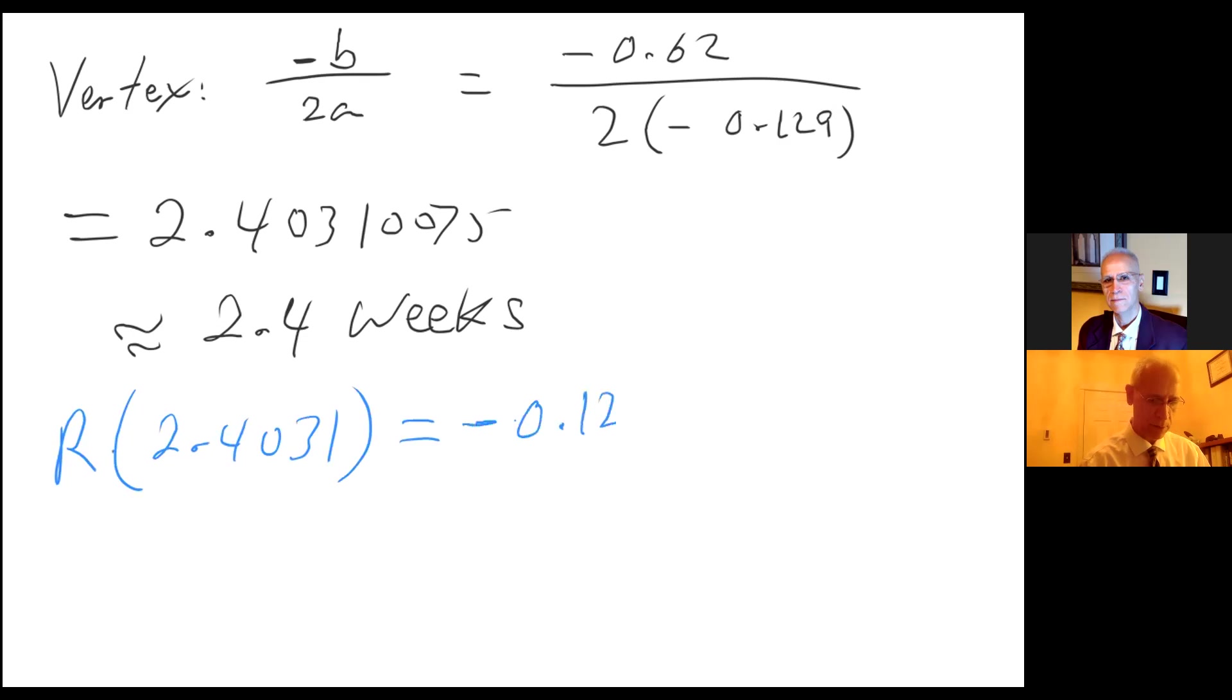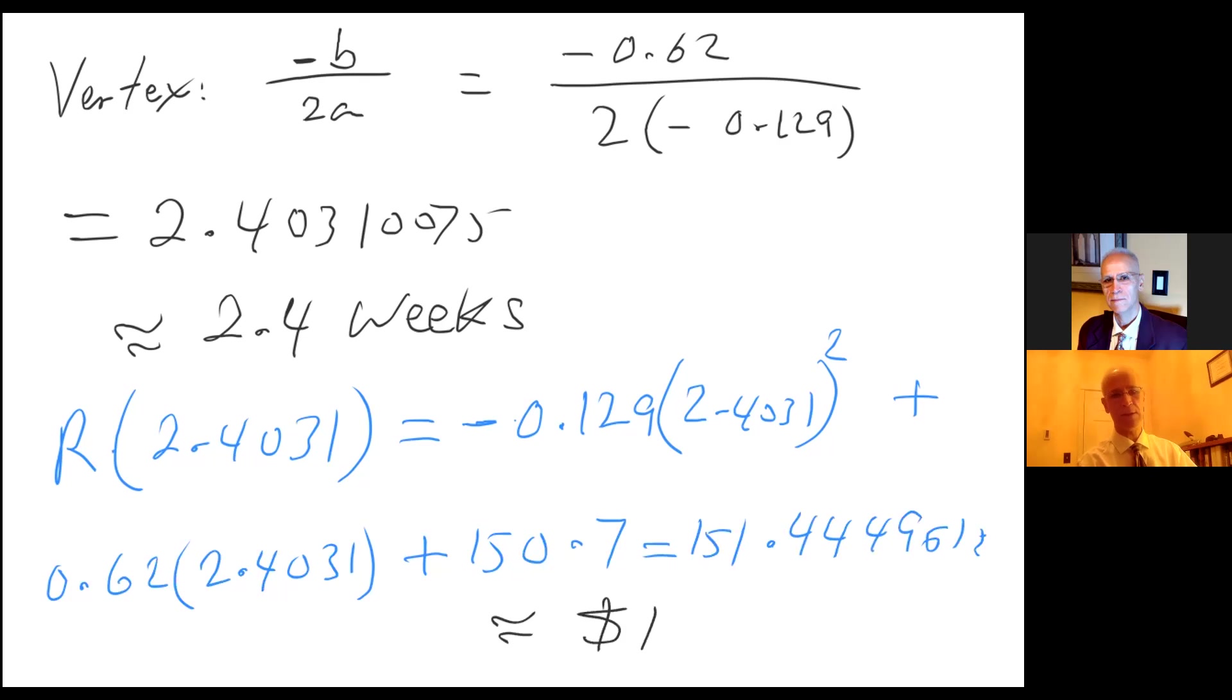-0.129(2.4031)² + 0.62(2.4031) + 150.7. Plugging that in the calculator gives us 151.44449612. We were told to round to one decimal, but part B actually said to the nearest dollar, I apologize. To the nearest dollar: $151 will be the maximum revenue. All right, thank you.